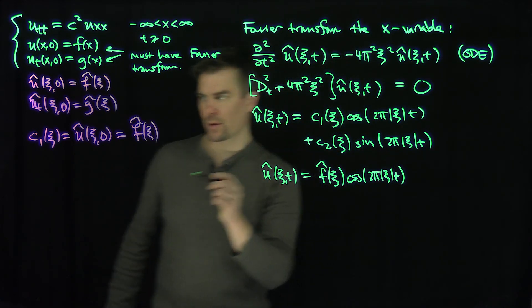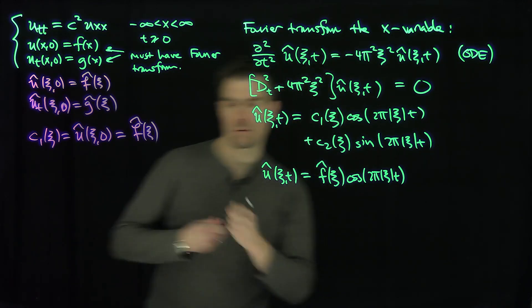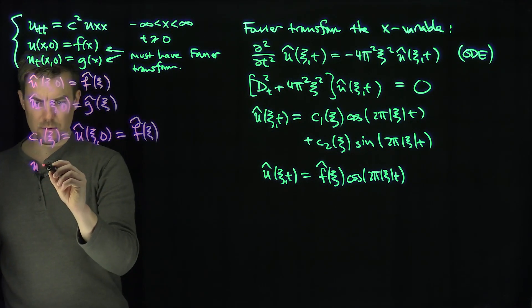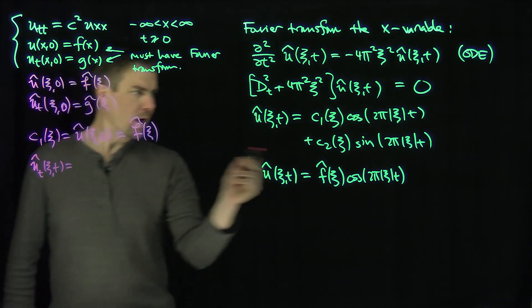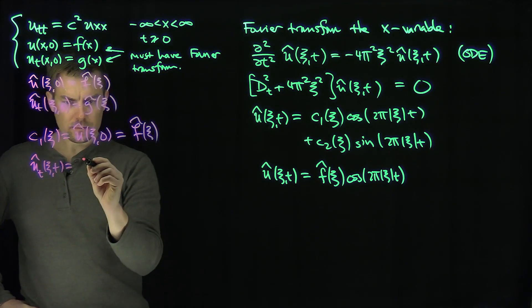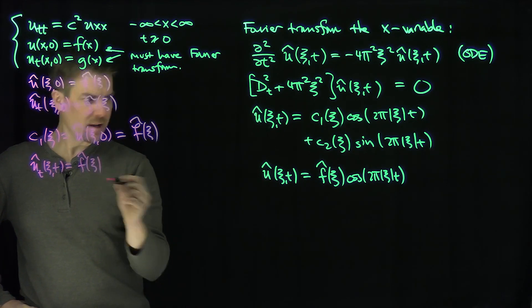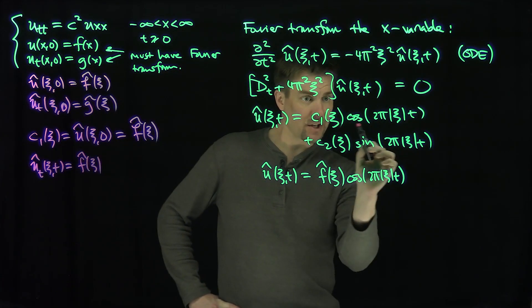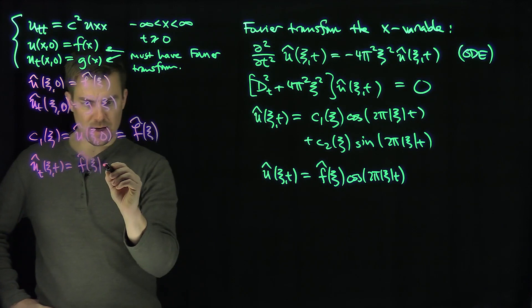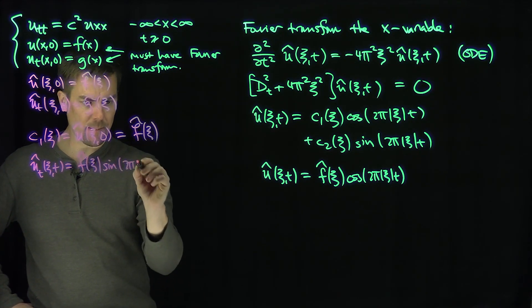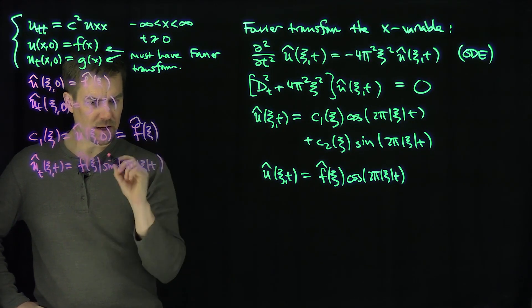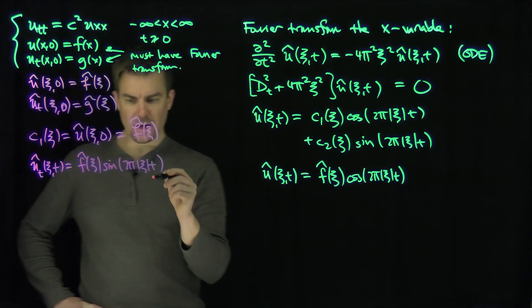Well, we have to do the derivative of this u hat. So what's u hat t xc t? Well, it's going to be f hat xc. And then that's my f hat xc. Then the derivative of cosine is sine. So I'm going to have sine 2 pi modulus xc t times the derivative of that expression with respect to t.